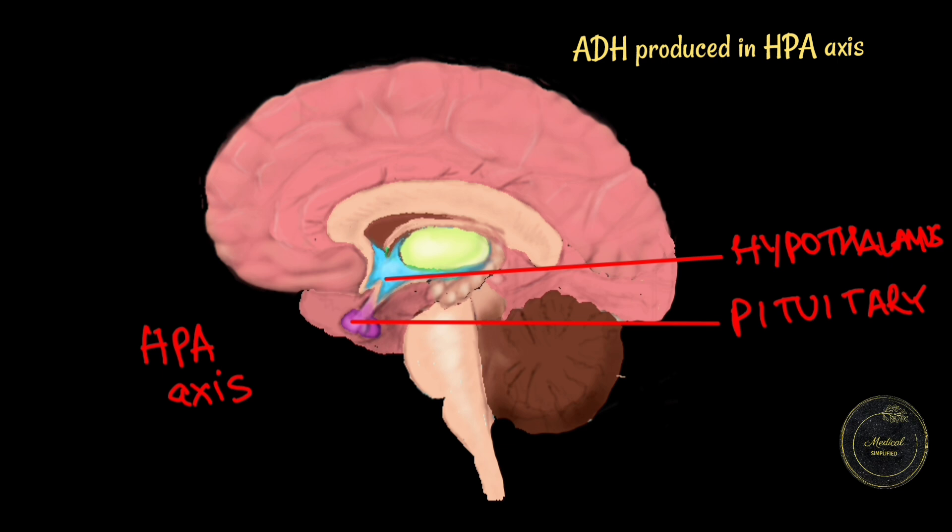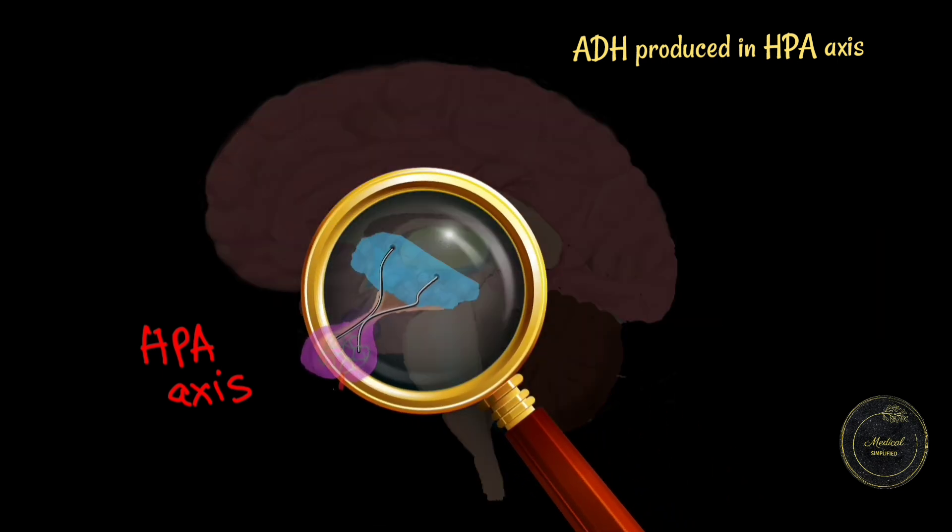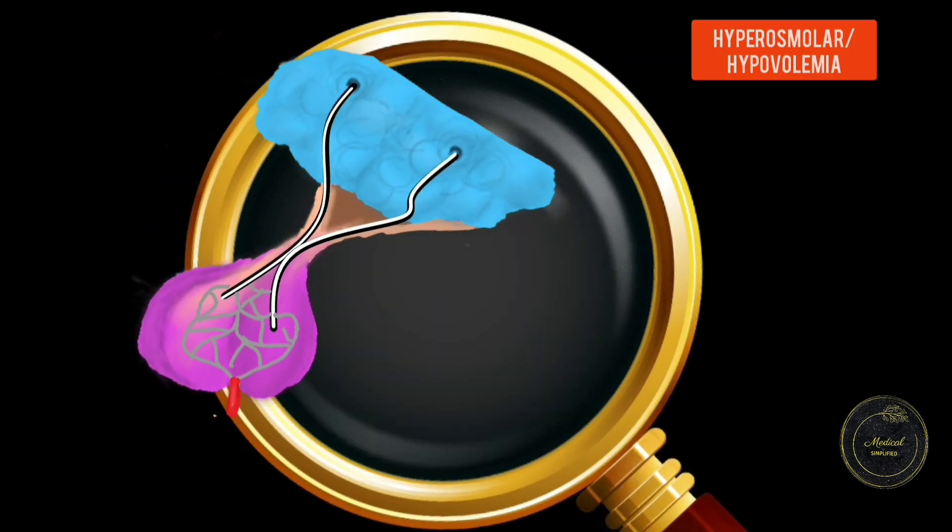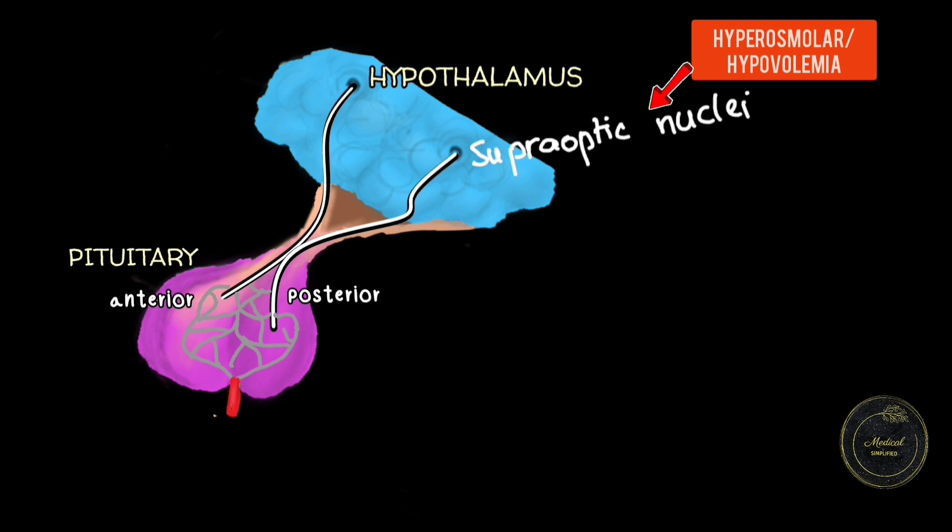Any hyperosmolar state like dehydration or any cause of volume depletion or hypovolemia in the body stimulates the supraoptic nuclei of the hypothalamus.